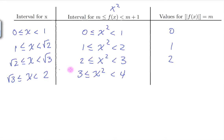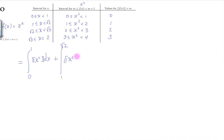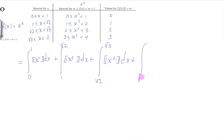Now we go straight to the integral. This becomes: the integral from 0 to 1 of the floor of x squared, plus the integral from 1 to square root of 2 of the floor of x squared, plus the integral from square root of 2 to square root of 3 of the floor of x squared.